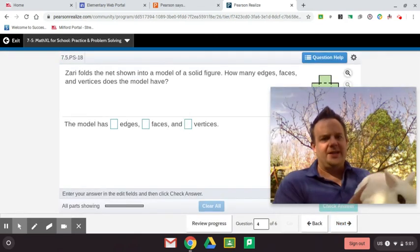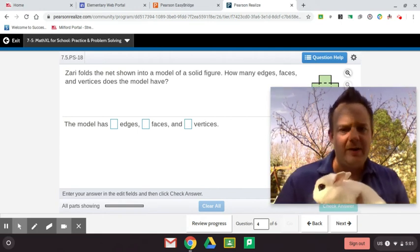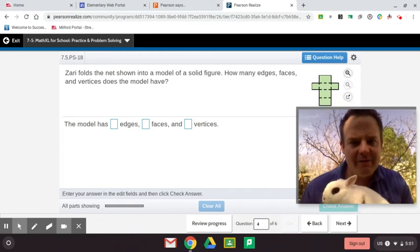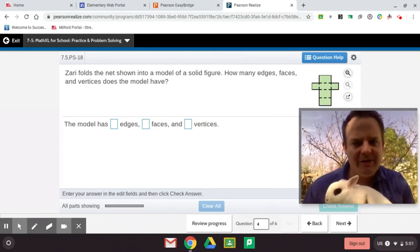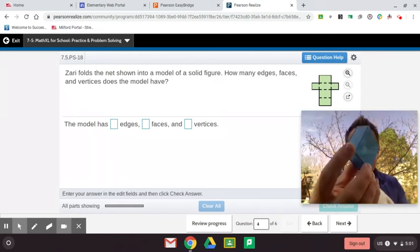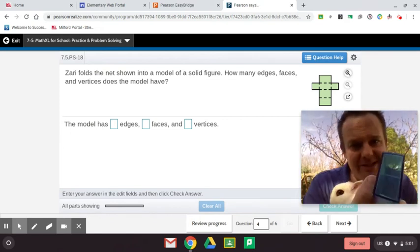Let's see what else we have here. Zari folds the net shown into a model of the solid figure. How many faces, edges, and vertices does the model have? Alright. So it looks like it comes here. Now, this is why I brought these solid figures for us, guys.